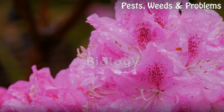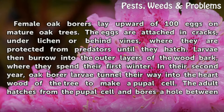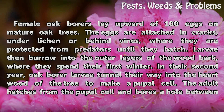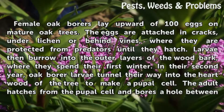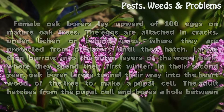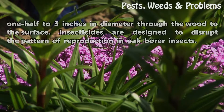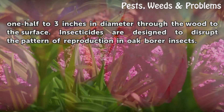Biology. Female oak borers lay upward of 100 eggs on mature oak trees. The eggs are attached in cracks, under lichen or behind vines, where they are protected from predators until they hatch. Larvae then burrow into the outer layers of the wood bark, where they spend their first winter. In their second year, oak borer larvae tunnel their way into the heartwood of the tree to make a pupil cell. The adult hatches from the pupil cell and bores a hole between one-half to three inches in diameter through the wood to the surface. Insecticides are designed to disrupt the pattern of reproduction in oak borer insects.